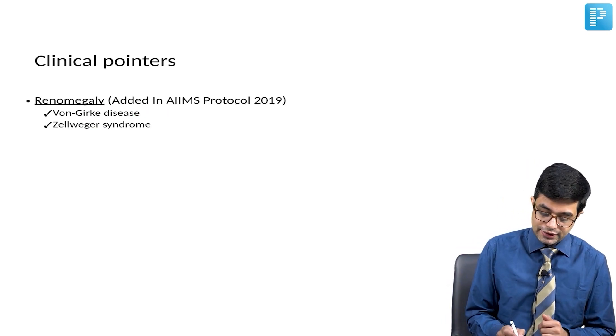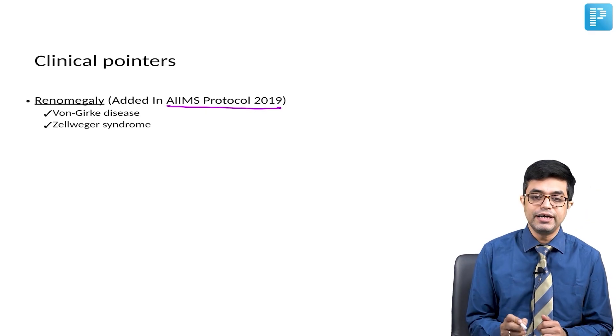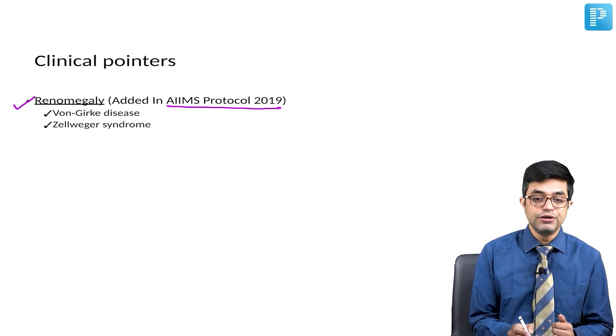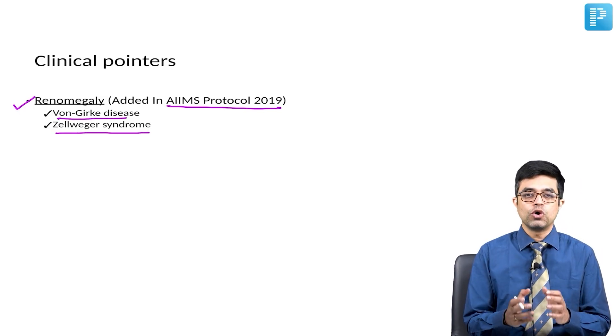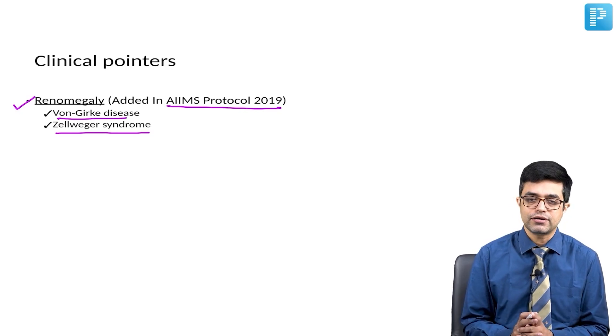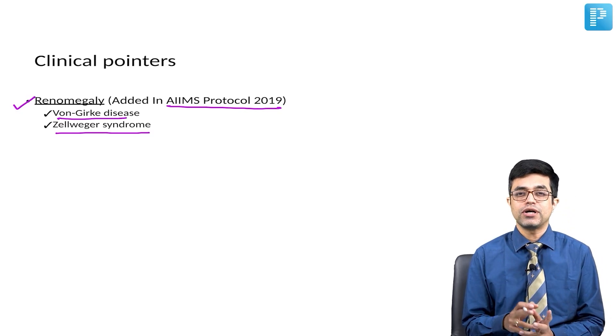Clinical pointers. This is something new, something important. In AIIMS protocol 2019, it was added. It was not there in the older protocols. Renomegaly is a feature of von Gierke's disease as well as Zellweger syndrome. What are the conditions in which abnormally increased size of kidneys are seen on ultrasound? One is von Gierke disease, and second is Zellweger syndrome, which is a peroxisomal disorder.